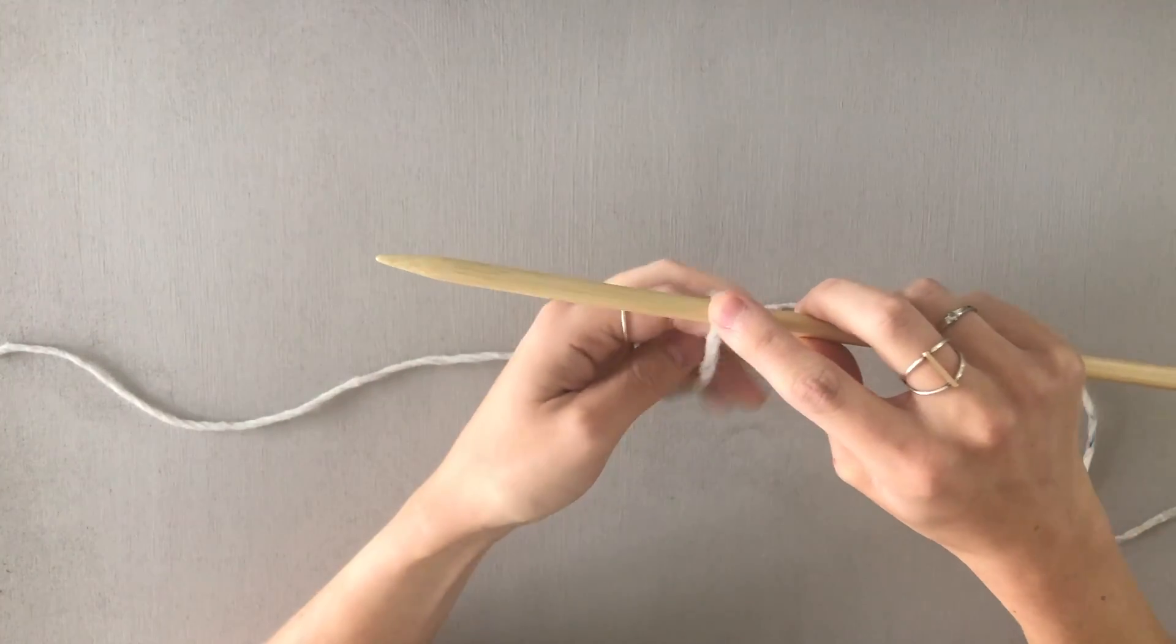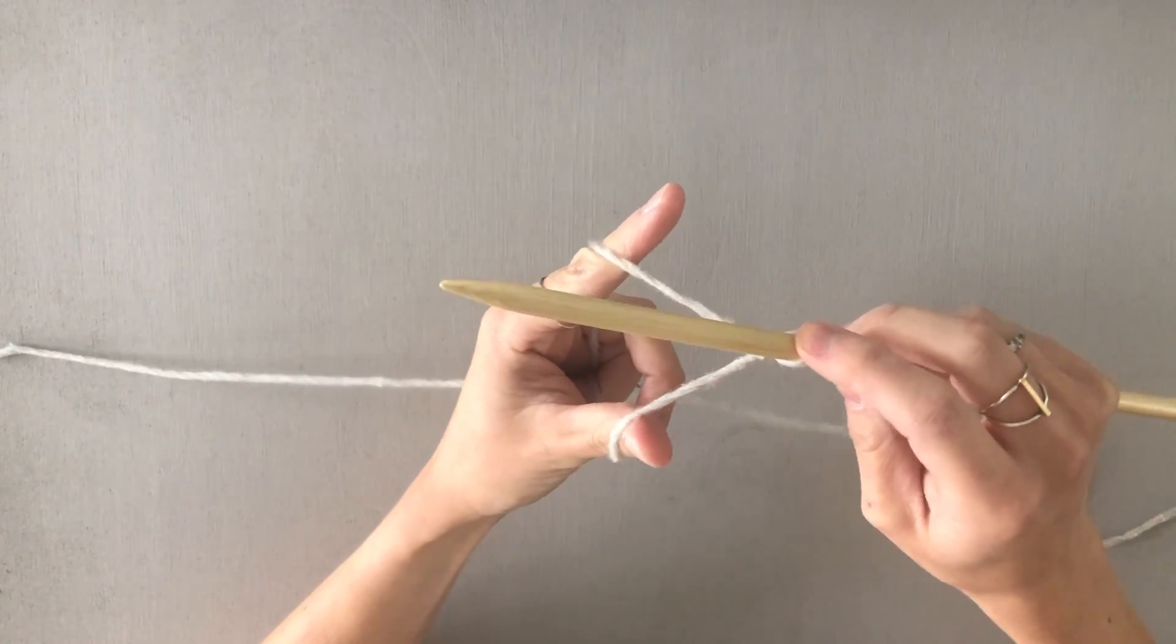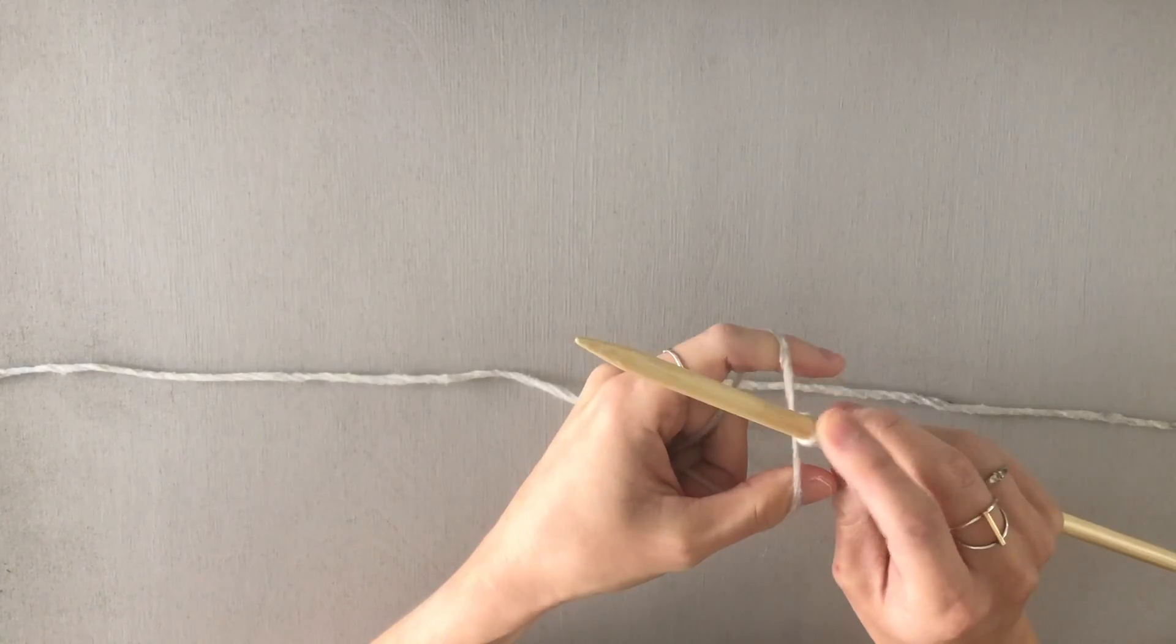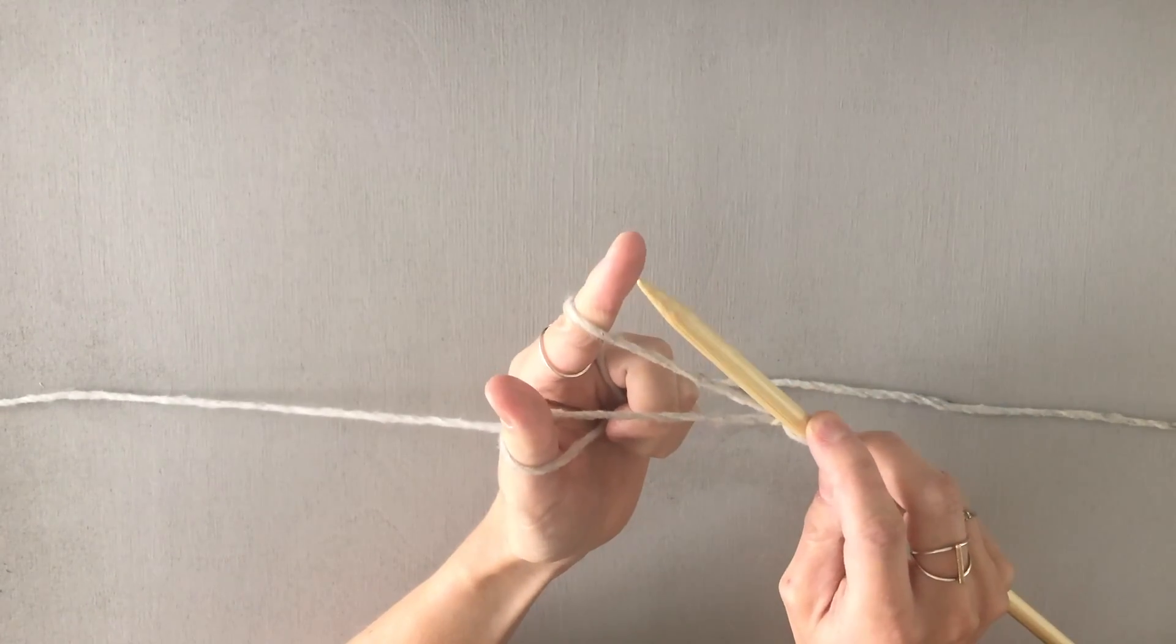Now we'll set up our slingshot just like for a long tail cast on just like this. Now instead of going to your thumb first, you're going to go to your pointer finger first.